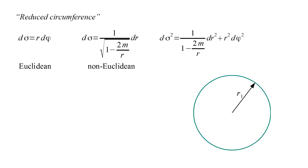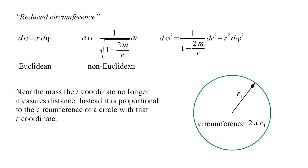Therefore, a circle with coordinate r1 will have a circumference 2 pi r1, independent of the mass. So although r1 no longer has an unambiguous meaning in terms of the radius of a circle, it continues to represent the circumference of a particular circle, and we call it the reduced circumference of that circle.